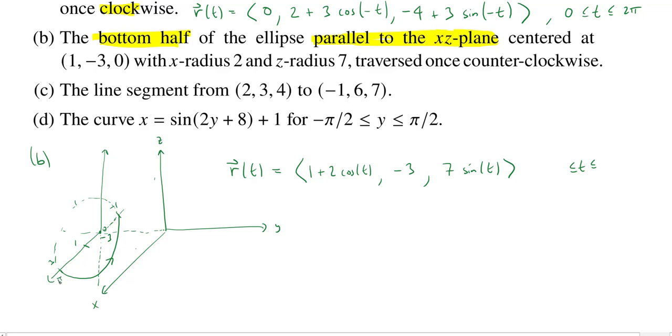So that's at π. So T will be at least π. And then we'll go all the way to the end of the period at 2π. So there is our bottom half of the ellipse parallel to the XZ plane with all the other accoutrements.